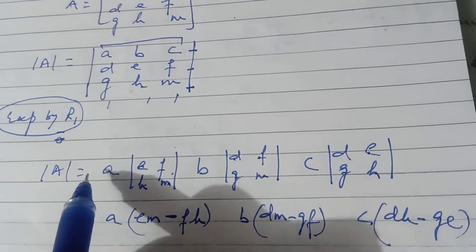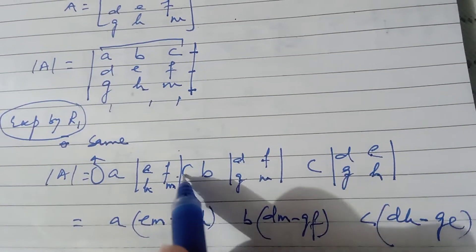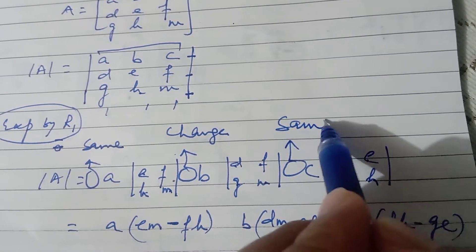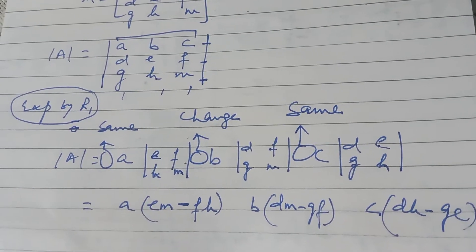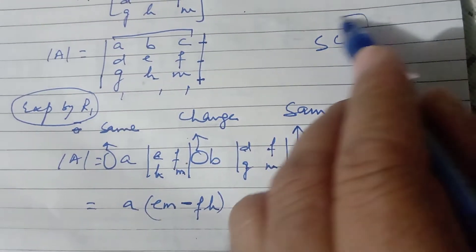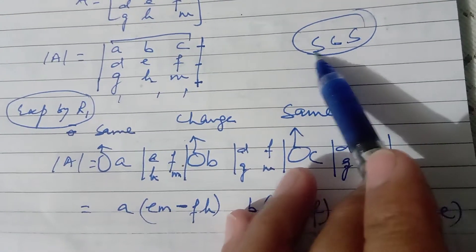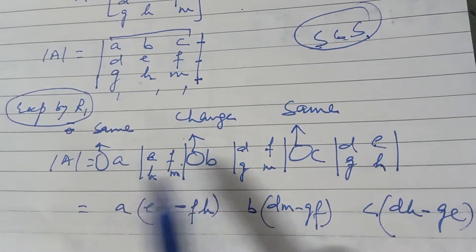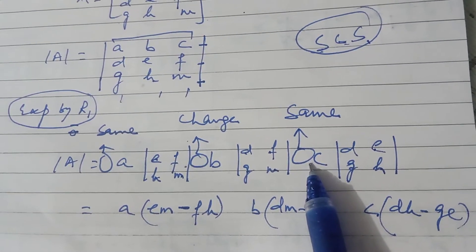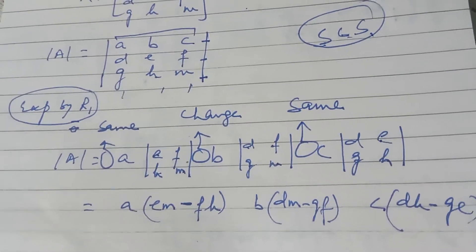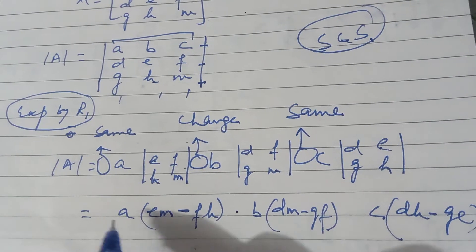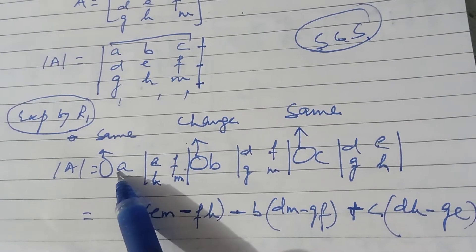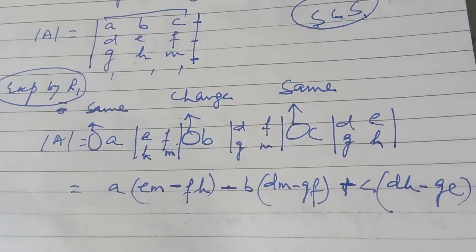Now about the signs — I didn't put the signs in between. The sign rule can be remembered as SC: Same Change Same — like 'Supreme Court is supreme.' This means: the sign of A stays the same, the sign of B changes, and the sign of C stays the same. If an entry has a positive sign, it stays positive (same); if the middle entry has a positive sign, it becomes negative (change); and the third stays same. This works regardless of whether entries are positive or negative — same means the sign doesn't change, change means it flips.